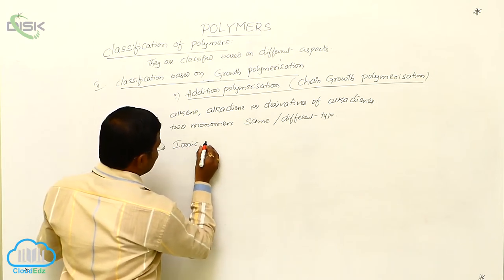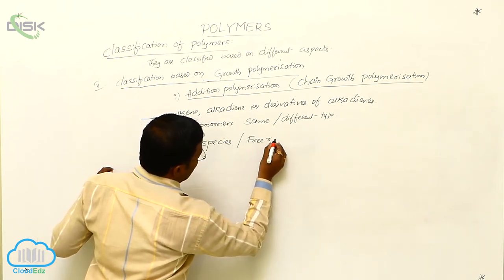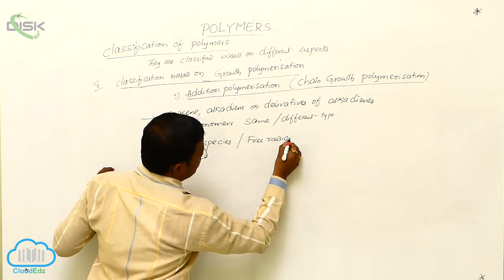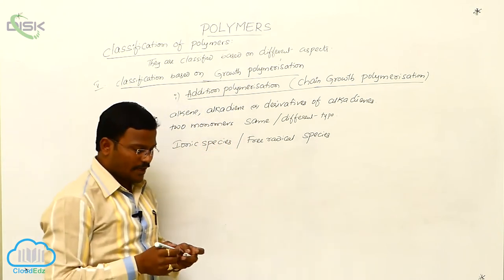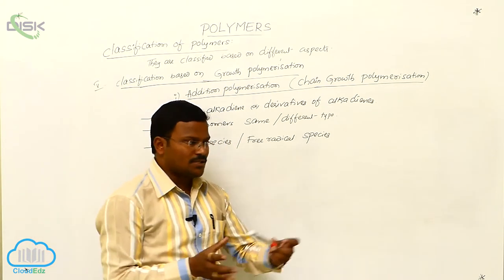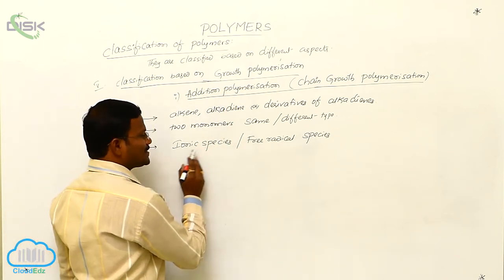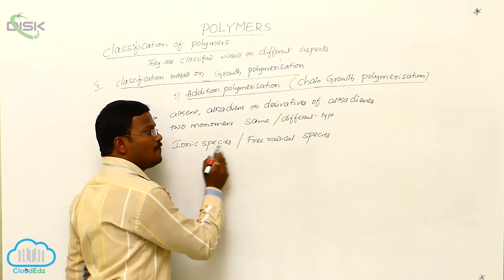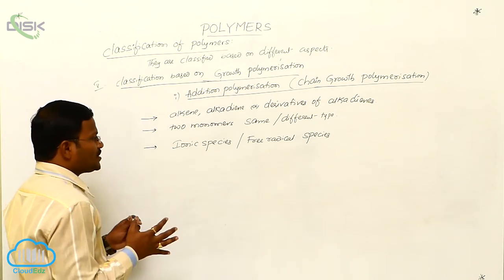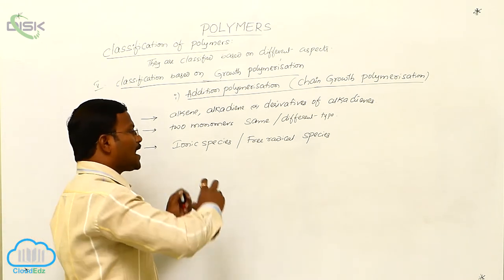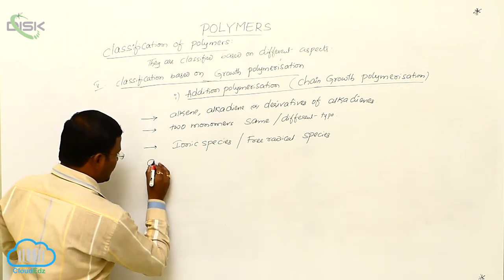During addition polymerization, there may be formation of ionic species or free radical species as intermediates. When two monomers react to produce addition polymers, the reaction may proceed through ionic intermediates or free radical intermediates, and based on this, addition polymerization is classified into two categories.